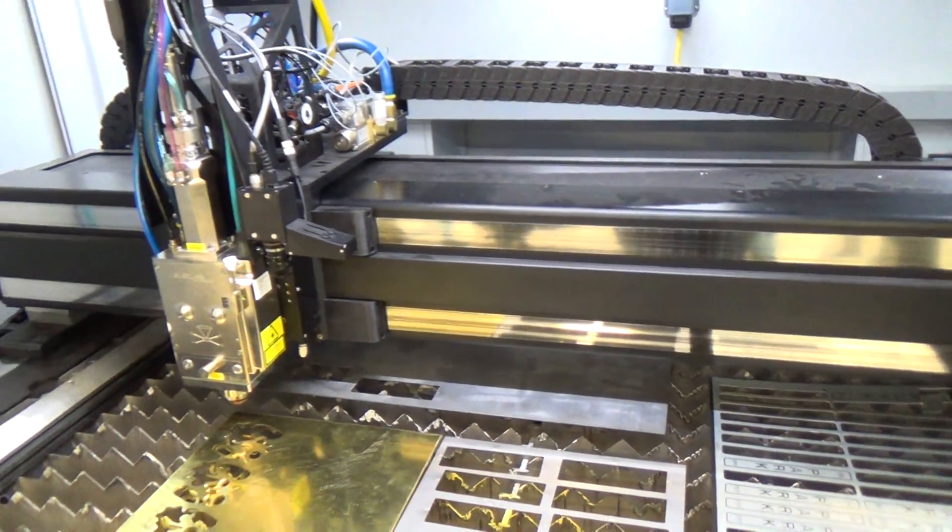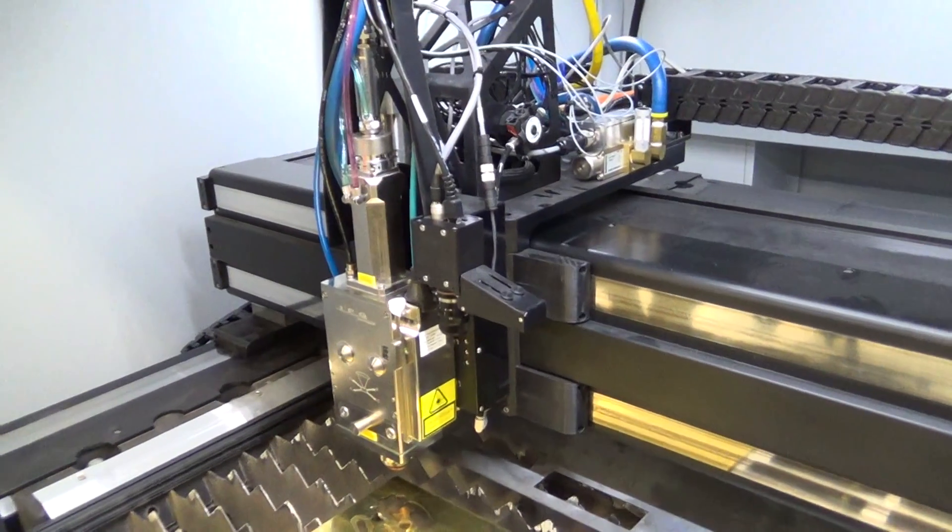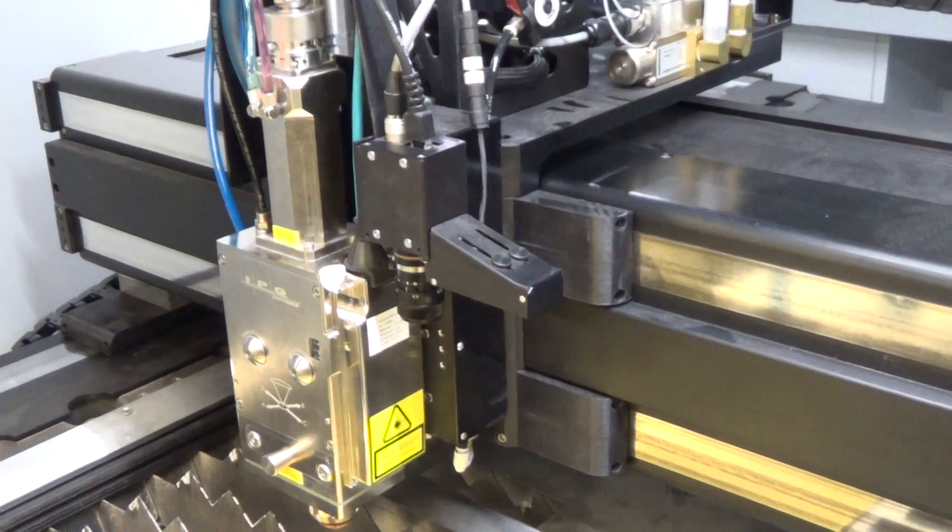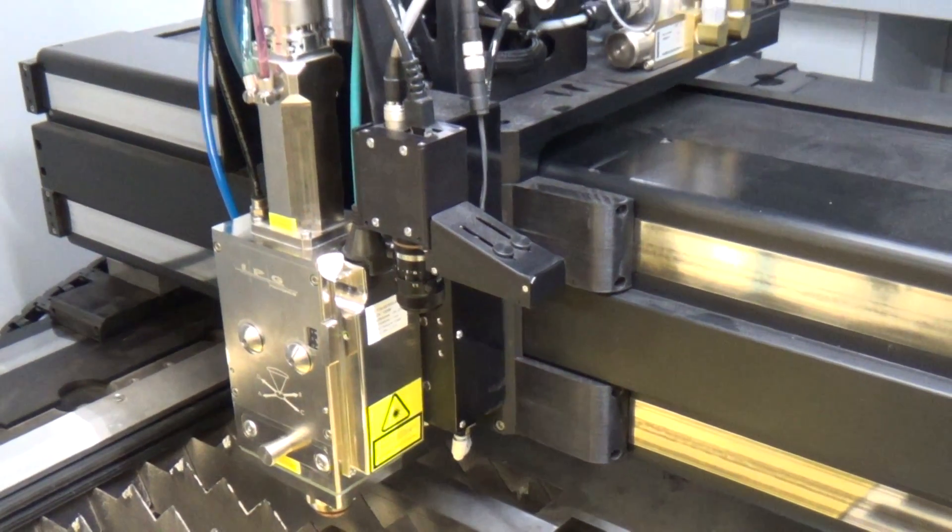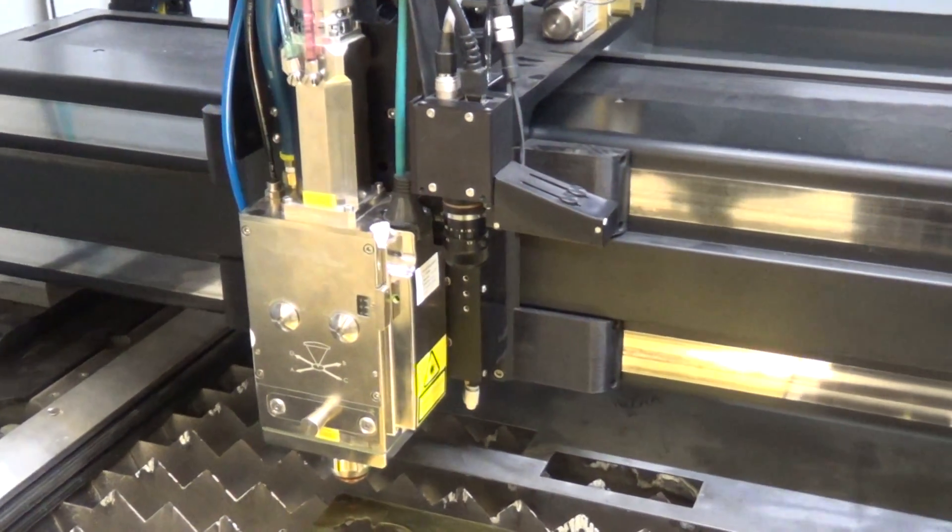This particular machine has the camera option. Basically what that'll do, it'll pick up off a hole, or it'll make sure the sheet is square if it's a little bit off.